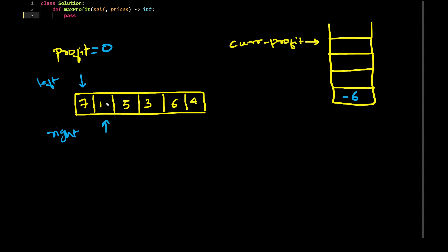I will move both pointers by 1 — right comes here and left comes here. I will store the current profit: current profit equals the value of the right pointer minus the value of the left pointer, that is 5 minus 1, which is 4. If the current profit is greater than 0, I will increment the profit by that current profit — so profit equals 0 plus 4. Then I'll move both pointers right by 1 again. The current profit becomes 3 minus 5, which is negative 2. Since it's negative, I will not add that value to the profit variable.